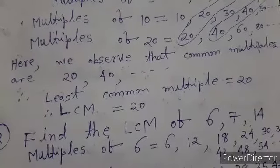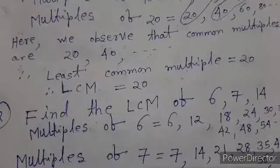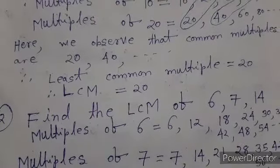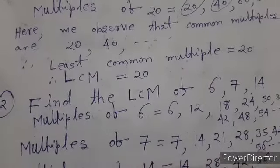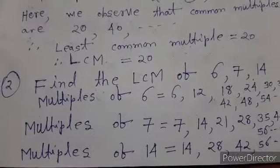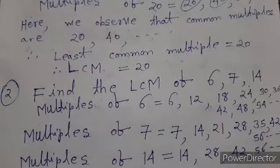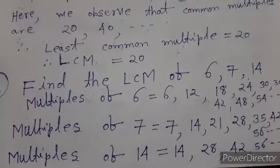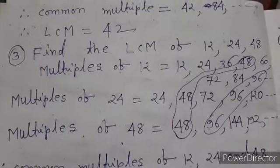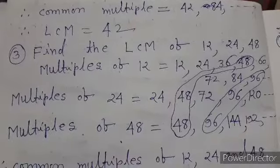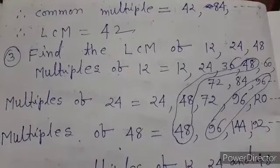LCM of six, seven, and fourteen. First, we make a list of all multiples. Multiples of six: six, twelve, eighteen, twenty-four, thirty, thirty-six, and so on. Multiples of seven: seven, fourteen, twenty-one, twenty-eight, thirty-five, forty-two, fifty-six, and so on. Multiples of fourteen: fourteen, twenty-eight, forty-two, fifty-six, and so on. We observe that the common multiples are forty-two, eighty-four, and so on. Hence, the smallest common multiple, that is the LCM, is equal to forty-two.